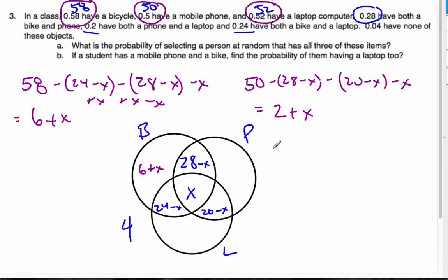And then finally, the 52 comprises of 52 minus the 24 minus X minus 20 minus X minus X. And again, it's 52 minus the 24 minus the 20, which gives me 8 plus X. So this is 8 plus X, this is 2 plus X, and 6 plus X. And so now I have all this information in these categories, it all depends upon X.